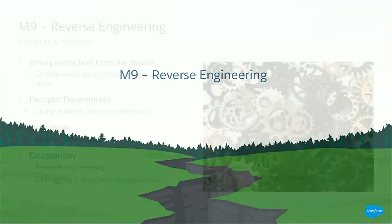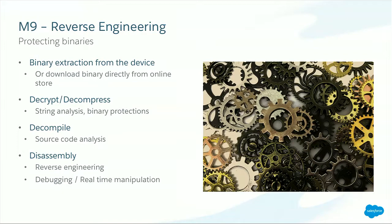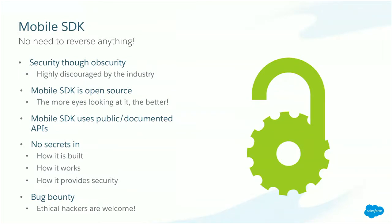Number nine is reverse engineering — taking your binary apart, decompiling, decompressing, disassembling. The mobile SDK is open source, so we welcome people to look at it. Trying to prevent reverse engineering is actually a bad practice because it's security through obscurity. If you're trying to prevent people from looking at your binaries, it means you're hiding something that shouldn't be there. You cannot store anything secret on the client side — it just doesn't work. We only use public APIs, everything is documented, and we have a bug bounty program.